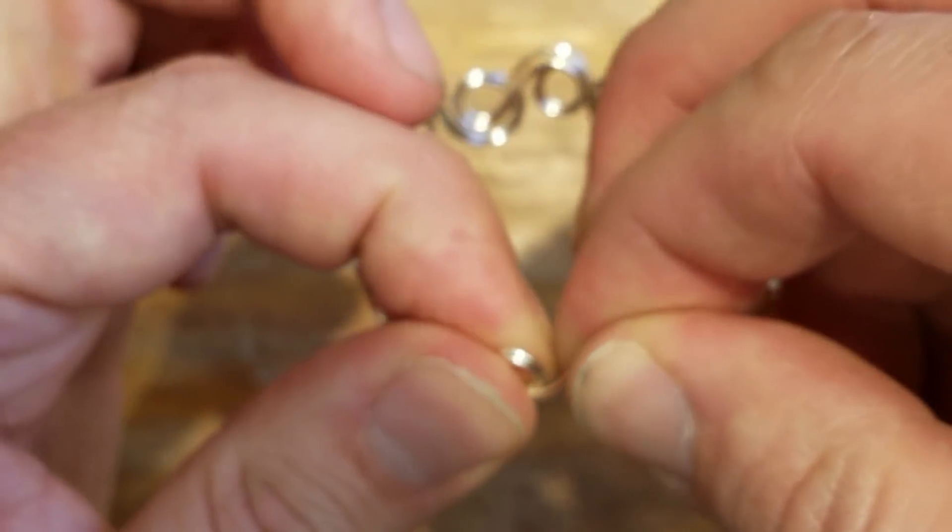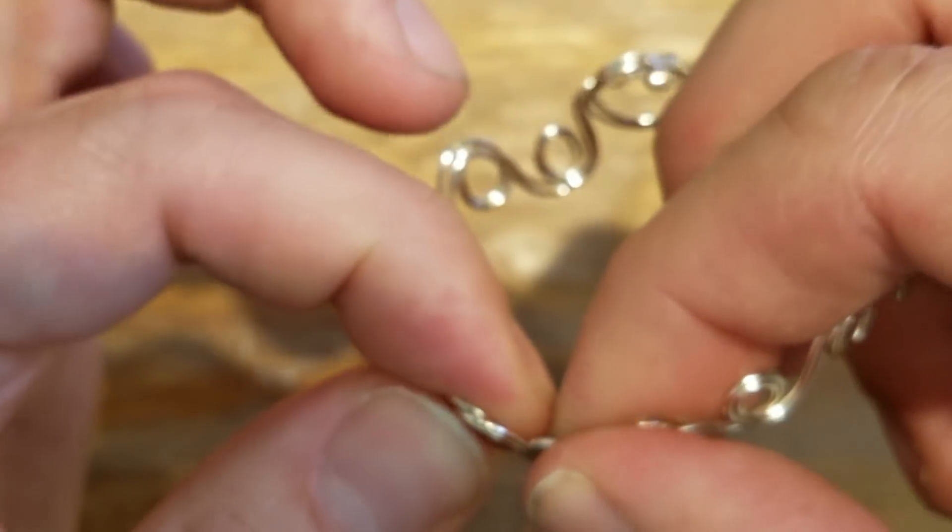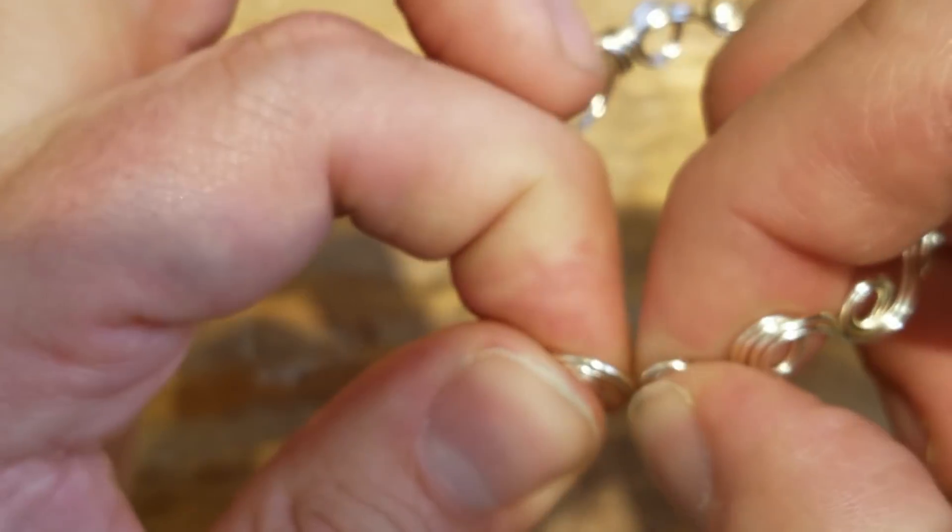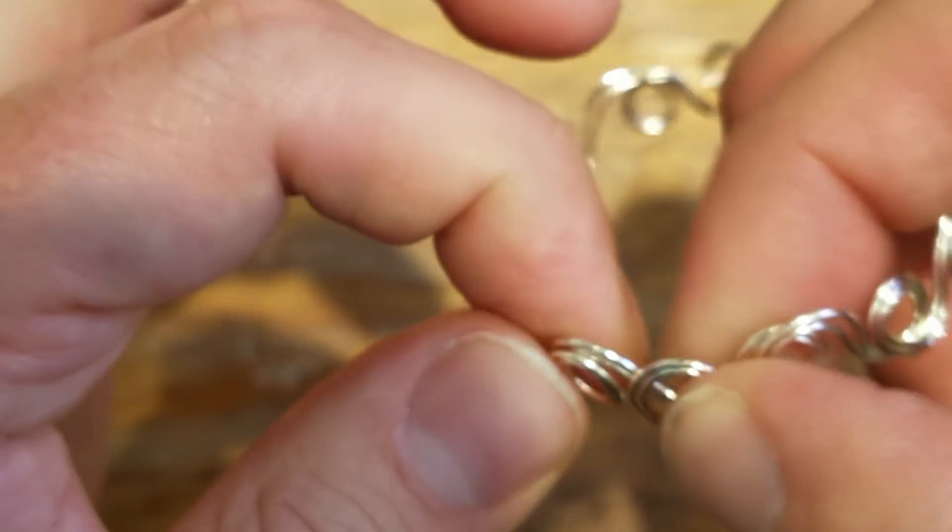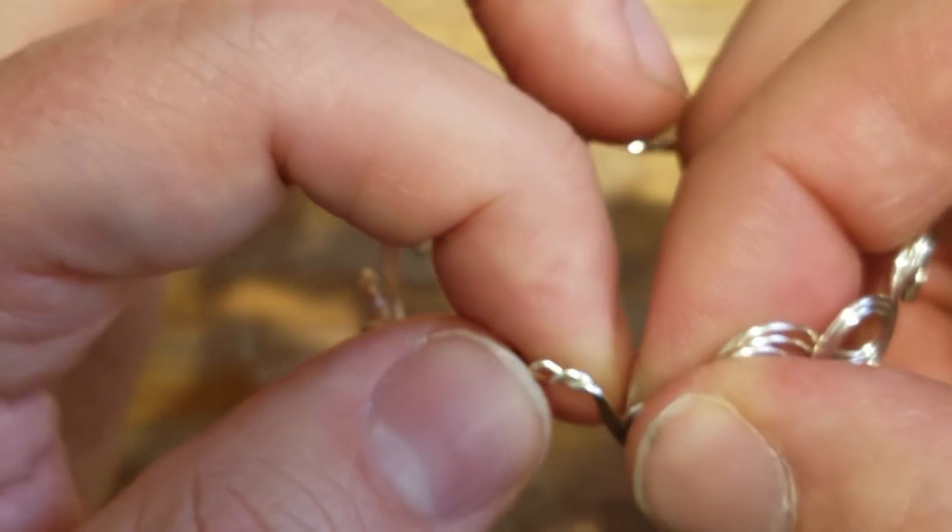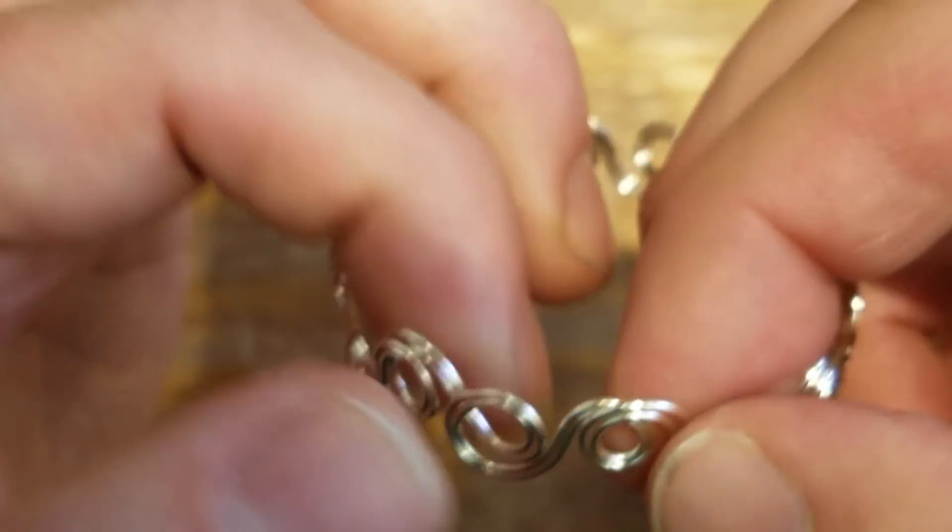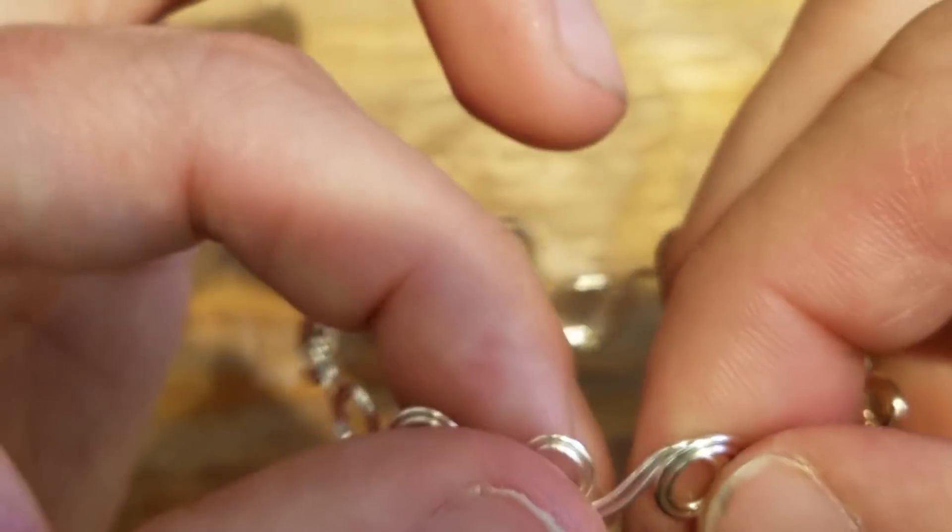You can make your own jump rings with this wire or you can just, I always find it's better to buy the jump rings because they usually are stronger. You want jump rings to be strong and they're usually made out of a stronger base metal than the copper or the silver that you get. That stronger base metal keeps them from coming undone.